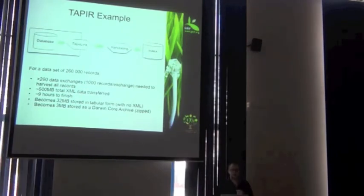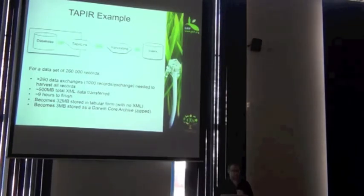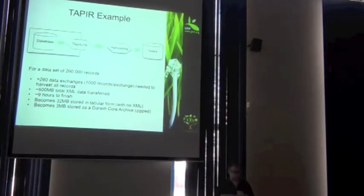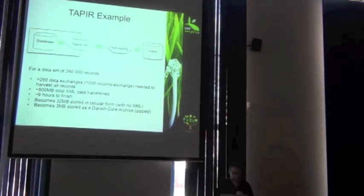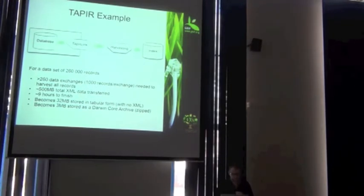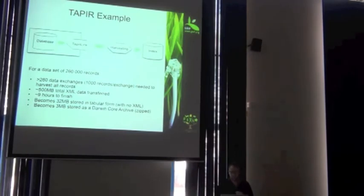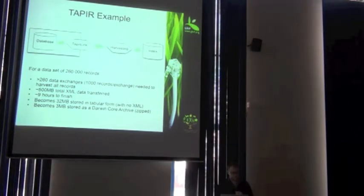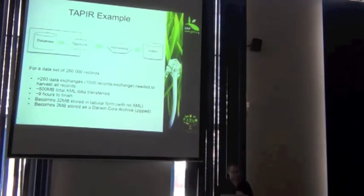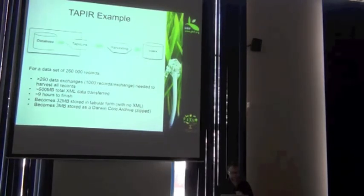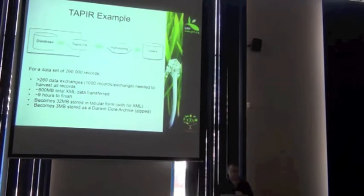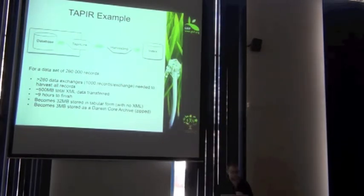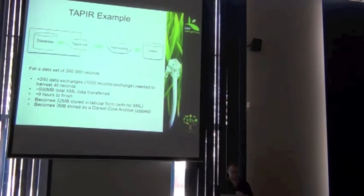So it's quite tedious for a central indexer like GBIF to go and do that. The end result of 260 data exchanges is about 500 megabytes of information. Now Tapir is basically giving back responses in XML language. It's quite verbose and there's a lot of information wrapped inside these elements. The whole process takes about 9 hours to finish. And when you take all the extra information out of it and store it in tabular form with no XML, it becomes quite small - only about 32 megabytes of information. Storing that same information in the Darwin Core Archive format, it becomes 3 megabytes. So it's a huge savings.